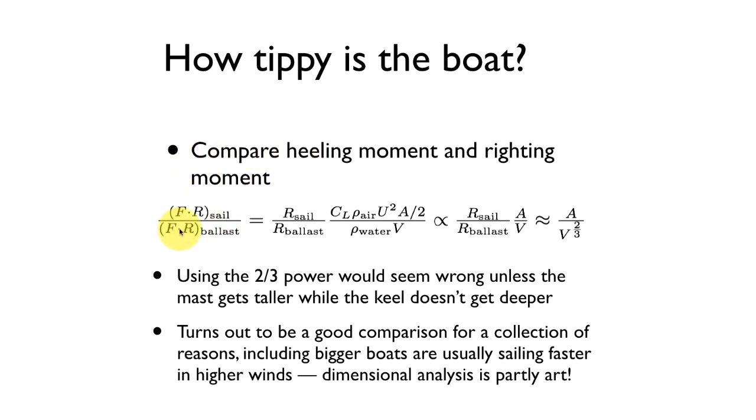Then we could look at the force times the moment arm for the ballast, and that's the gravity force on the keel that's tending to pull the boat back upright. The deeper the keel is, the more readily it's going to pull the boat back upright. So these two lever arms are important. How high up the mast is will determine the moment arm for the sail, and how deep the keel is will tell us the moment arm for the ballast.